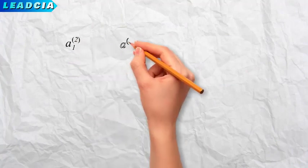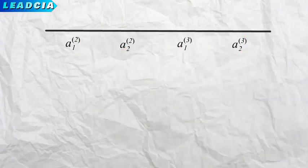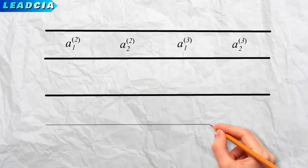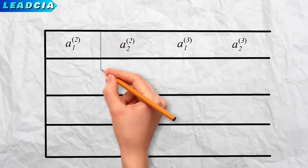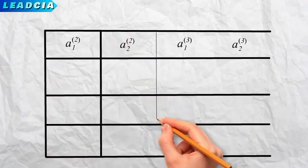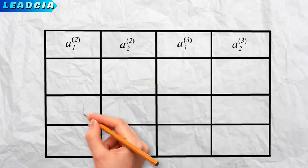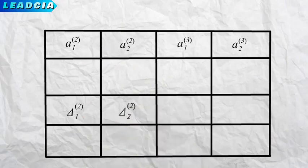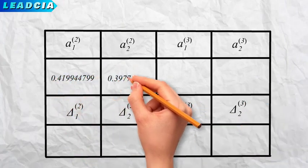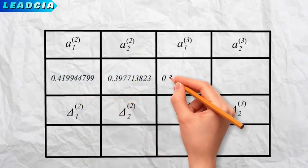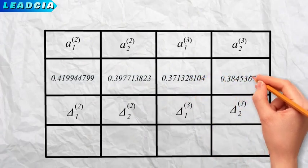We can draw up a table to record the values of the a's. We can omit the bias, since their a's are always equal to 1, and the input neurons since their a's are equal to the features x1 and x2. In the same table, we reserve another row to record the values of the deltas, which we will see how to calculate in the next step.